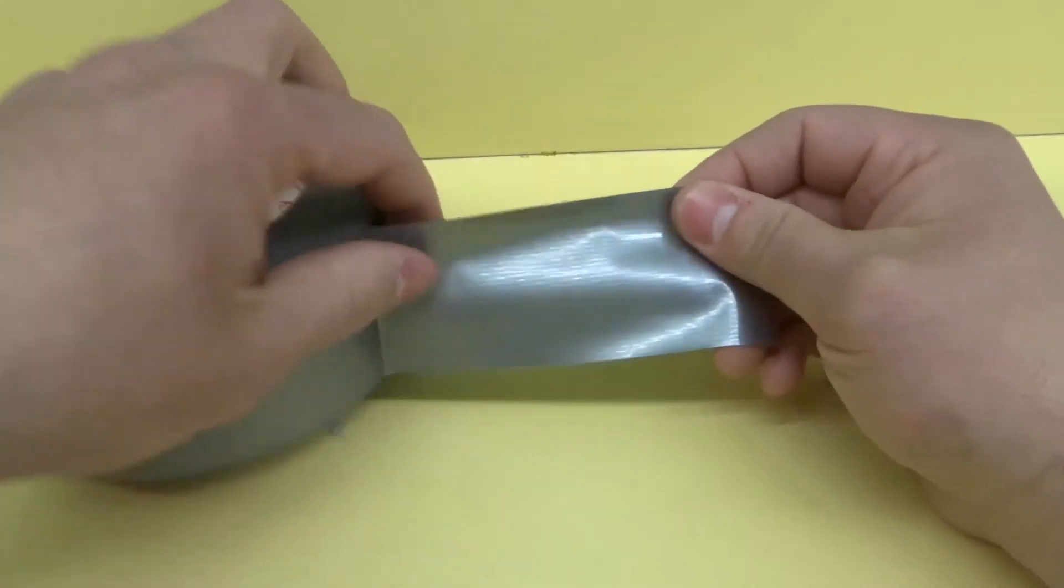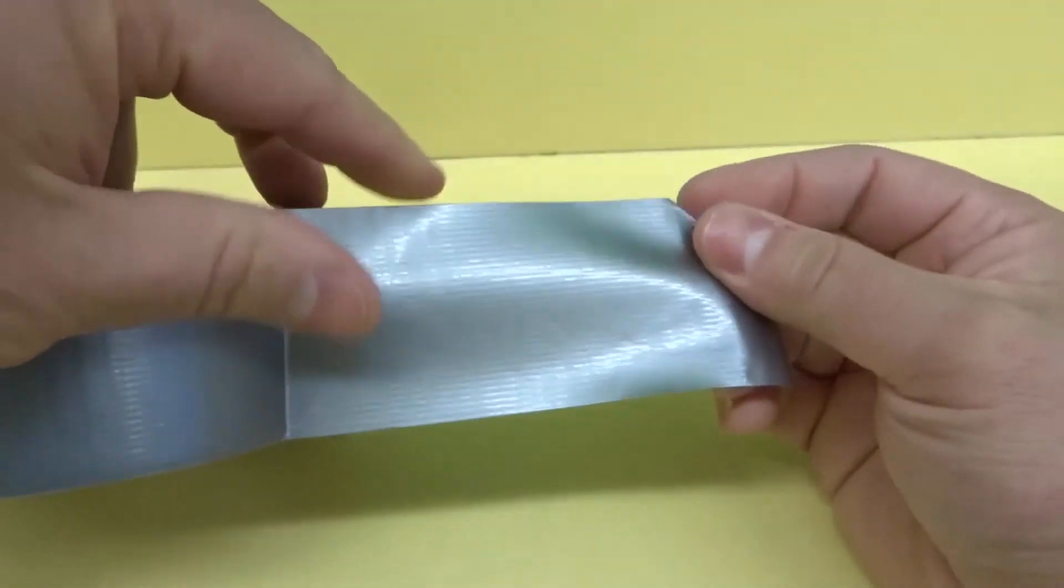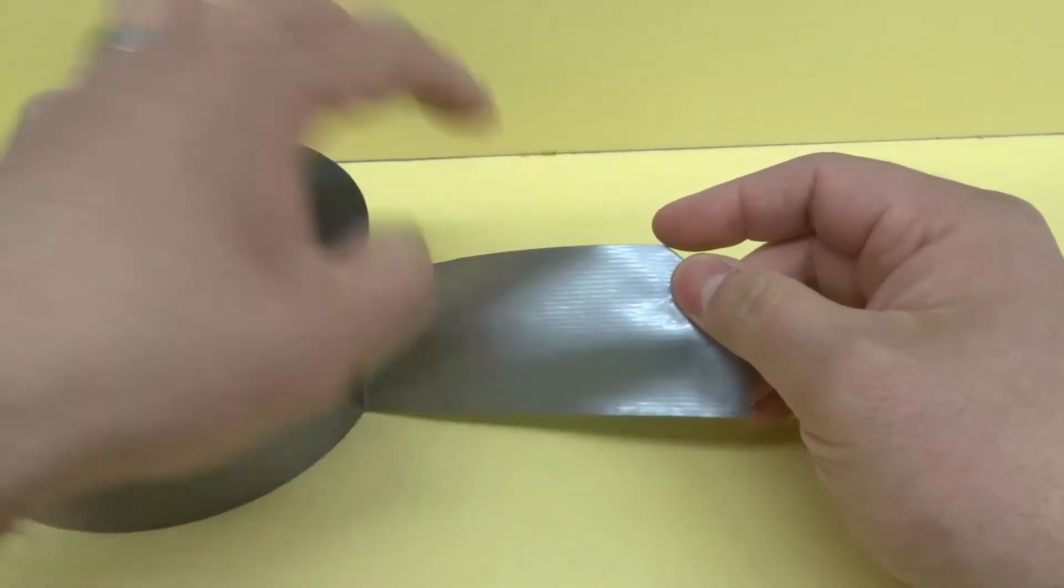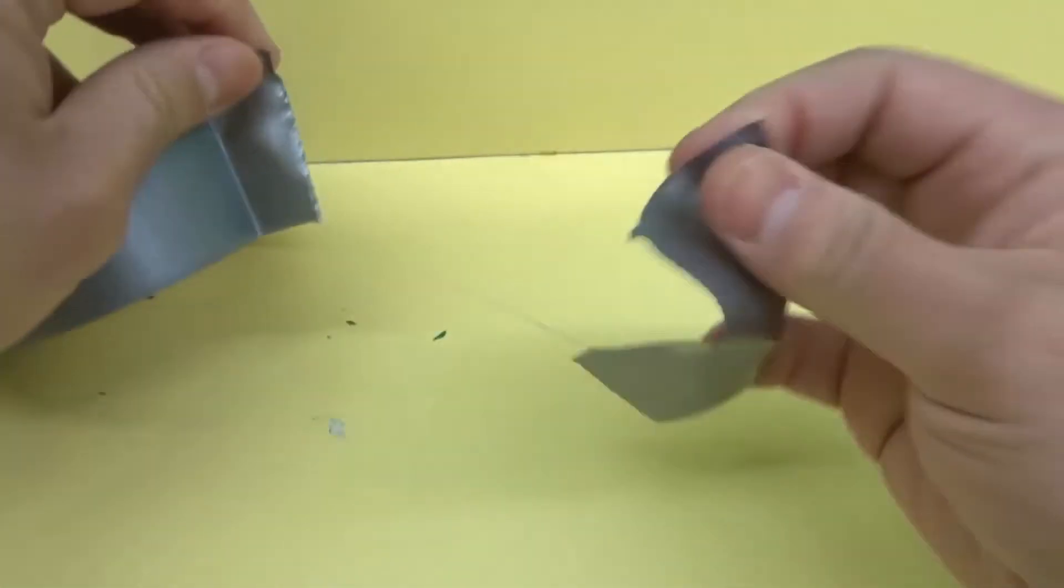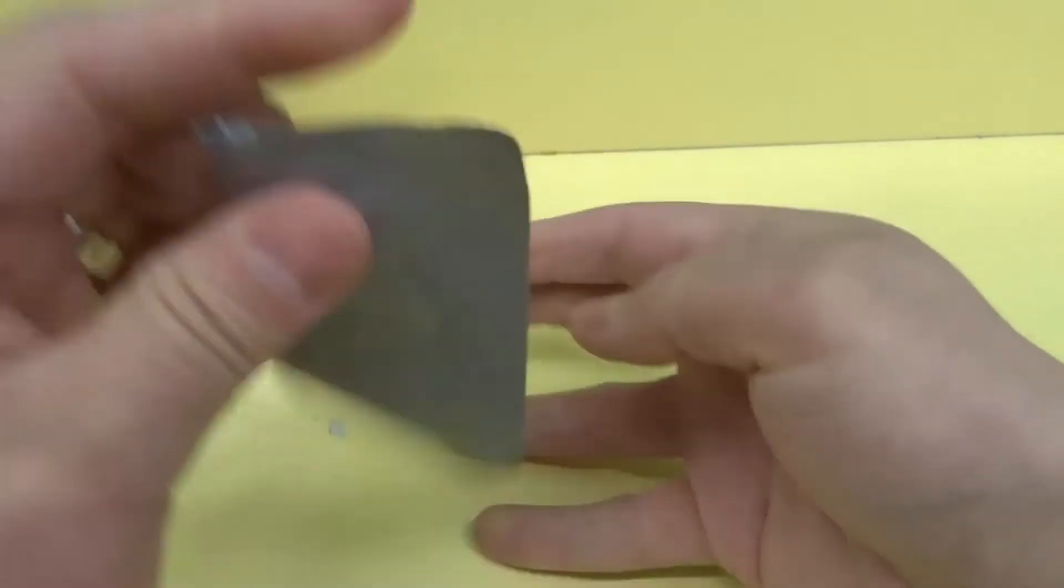Okay the second thing that makes it strong is the actual interwoven fabric that you kind of see here. So I'm going to rip a piece off and that's also what allows it to be ripped off like that which is really really cool.